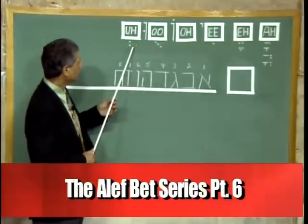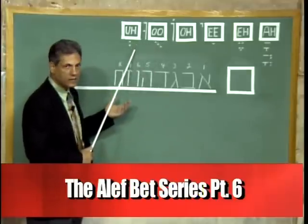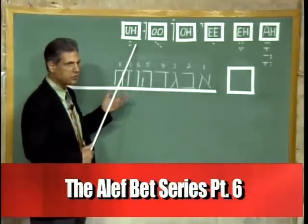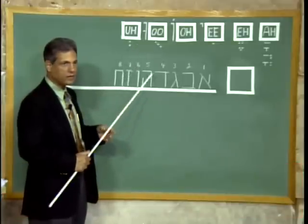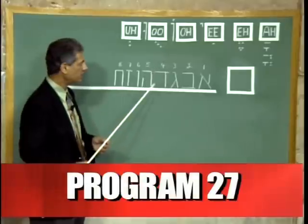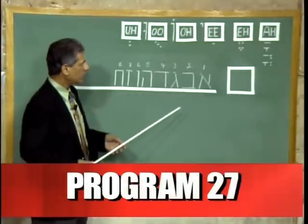And of course the last vowel is a short U sound, like in the word 'bug' or something like that.